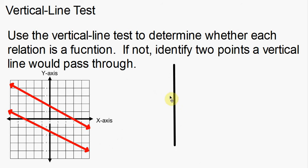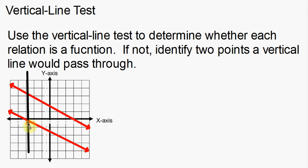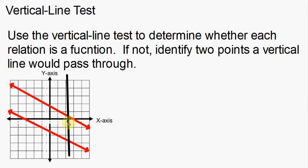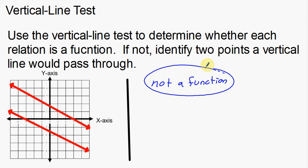If I grab my vertical line and try to see if it passes through two points — notice that as soon as I put it on the graph, there are two points: one point right there, and one point down right here. As I keep moving my line, one point right there and another point just right there. It doesn't matter where I move it — I intercept twice. Those two intersections make this not a function. If we intercept two different points on this graph, that is not going to be a function.